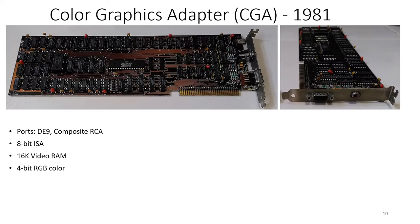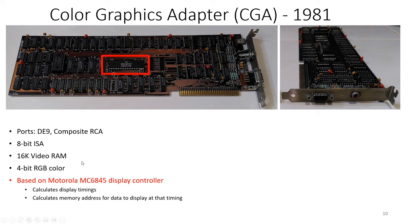Now let's look at the old CGA - Color Graphics Adapter - that my IBM PC uses. This standard was released in 1981 by IBM with their first PC. It supports the DE9 and Composite RCA ports. It uses an 8-bit ISA slot. The video RAM is only 16K - very small compared to the gigabytes we have today. It has 4-bit RGB color only. This card is based on the Motorola MC6845 display controller. The analogy for today is that MC6845 is like our NVIDIA GeForce chip, and IBM designed the whole card around it.